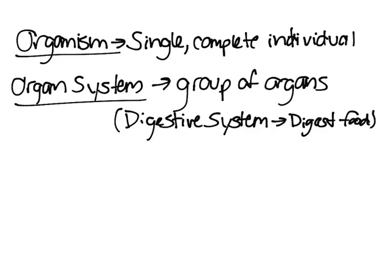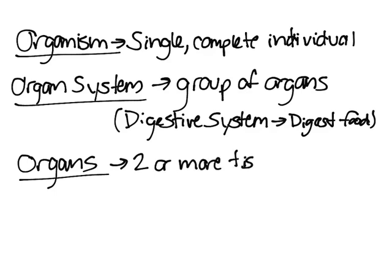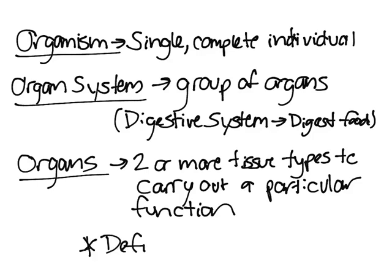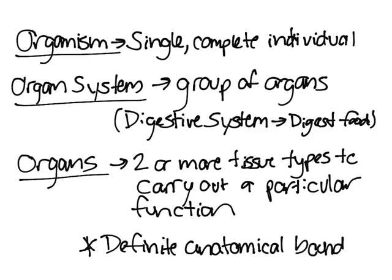Organs make up organ systems. An organ is a structure made up of two or more tissue types to carry out a particular function. A key thing to note is that organs have a definite anatomical boundary — meaning you can distinguish them from other organs around them, such as your stomach being separate from your liver or your gallbladder.